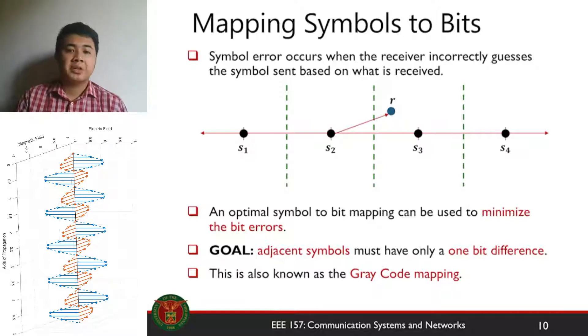There's actually an optimal symbol to bit mapping that can be used to minimize the bit errors and we call this the gray code mapping. The goal of the gray code mapping is that adjacent symbols must have only one bit difference.